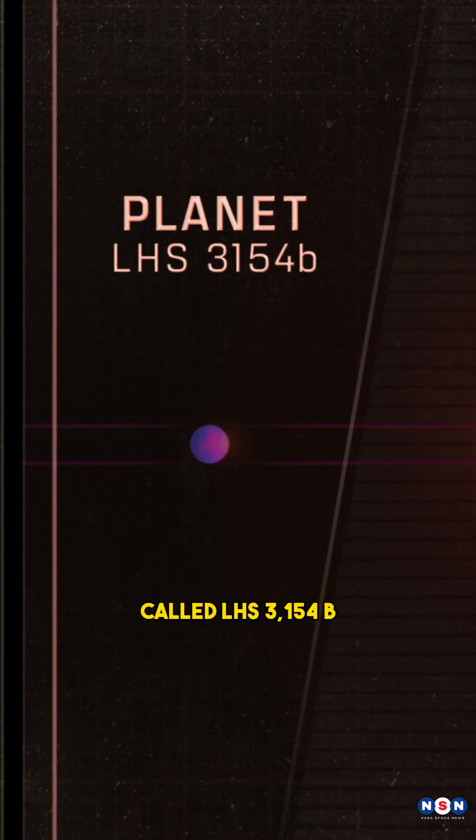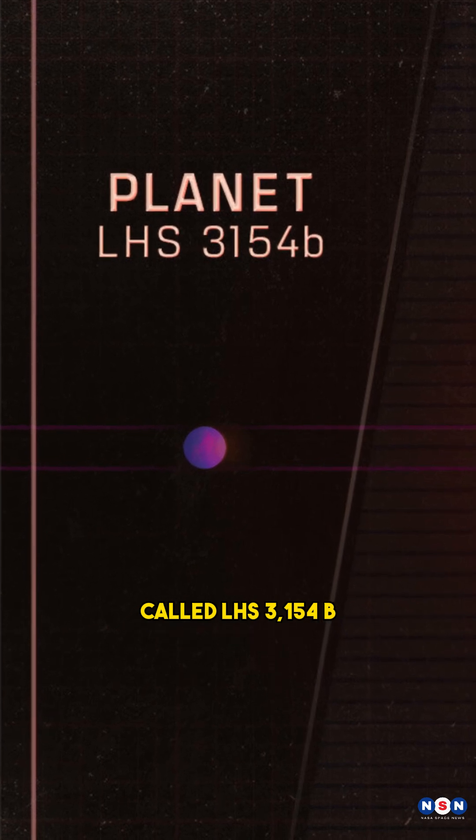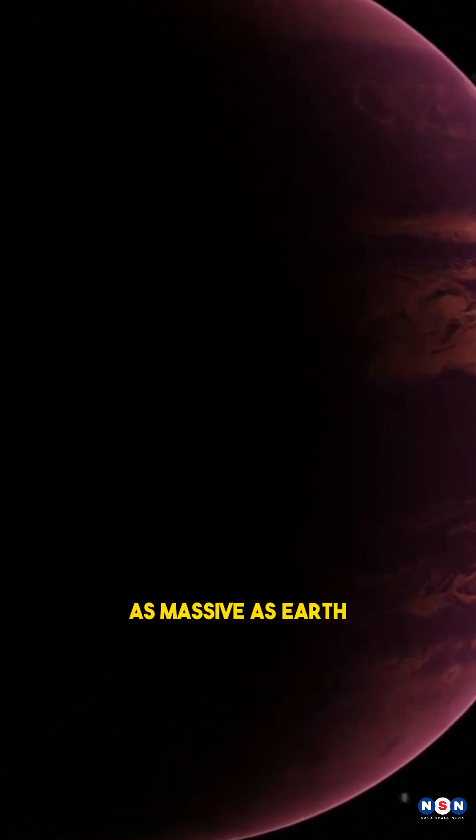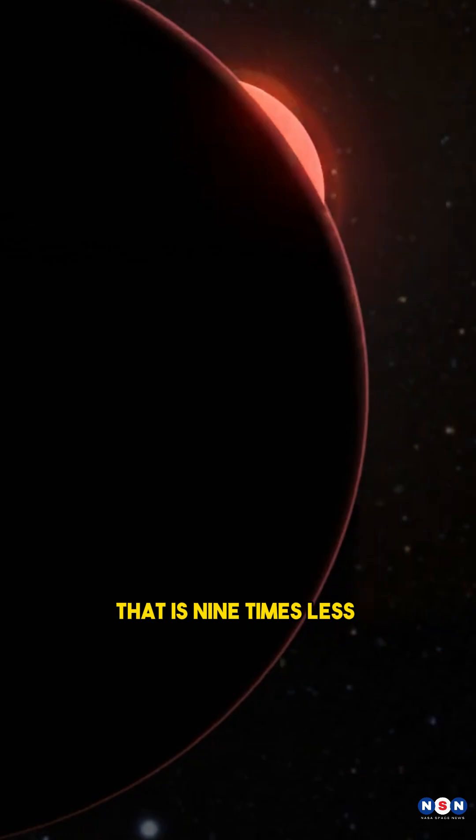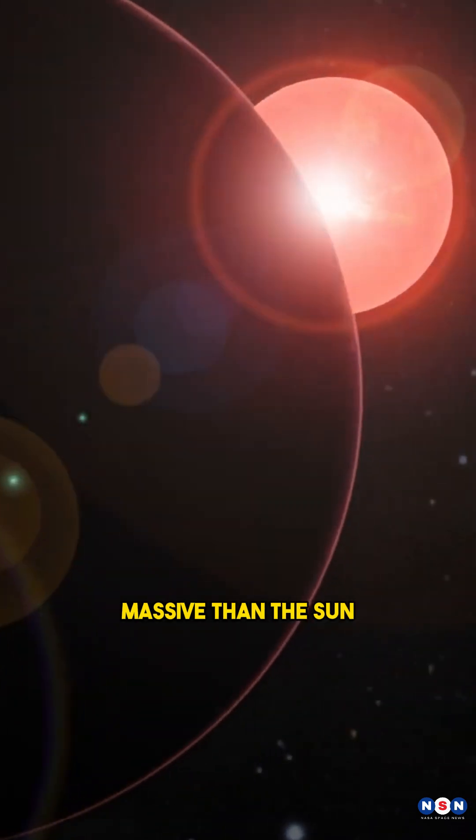This planet, called LHS 3154b, is more than 13 times as massive as Earth, and it orbits a tiny star that is 9 times less massive than the Sun.